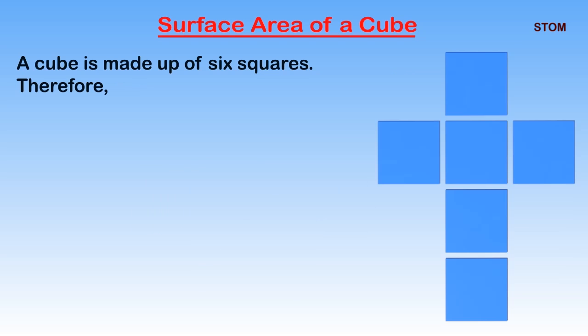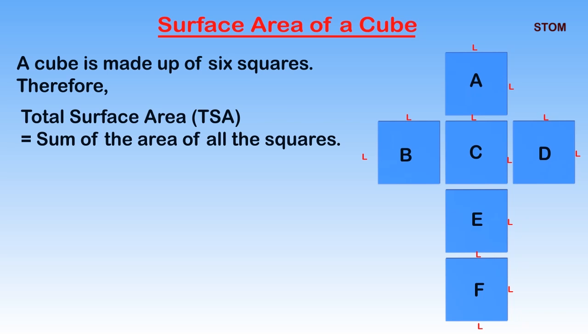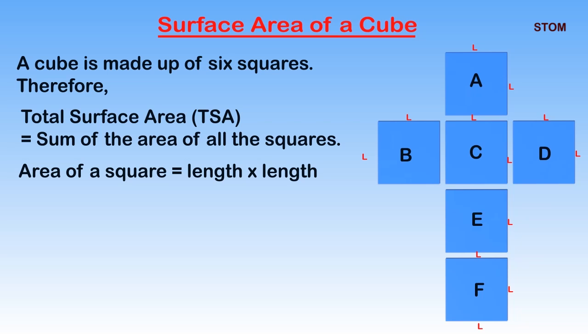To calculate the surface area of a cube, we have to remember that a cube is made up of six squares, and the total surface area will equal the sum of the area of all the squares. The formula to calculate the area of a square is length multiplied by length, which gives us L squared.